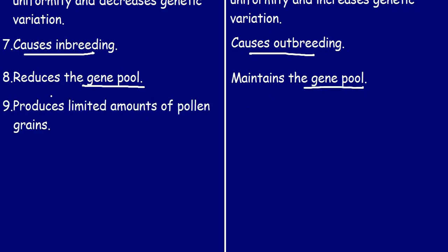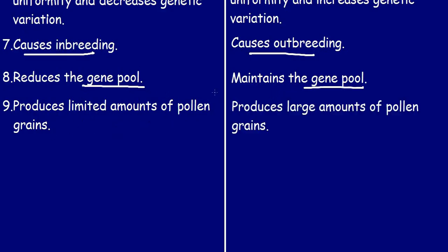The ninth point: self-pollination produces limited amounts of pollen grains, whereas cross-pollination produces large amounts of pollen grains.